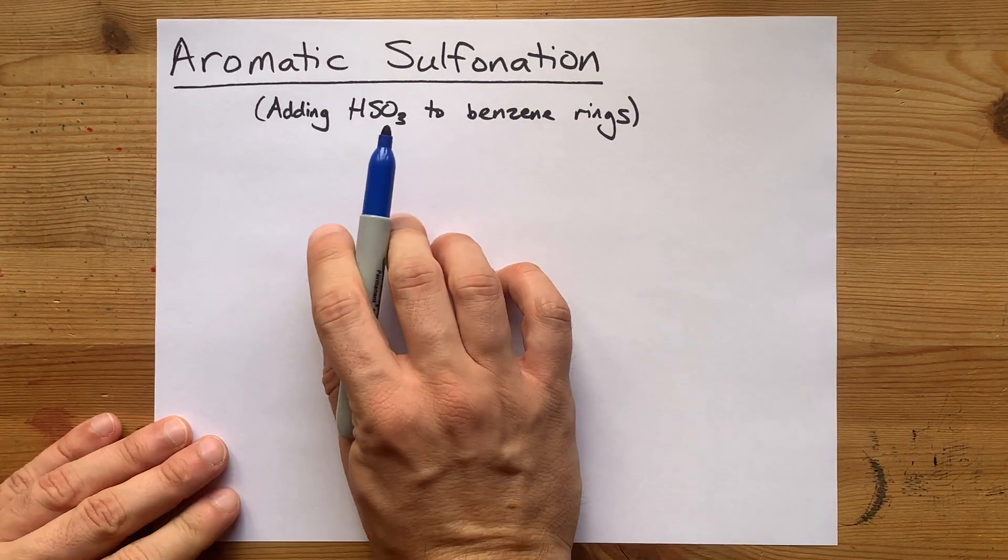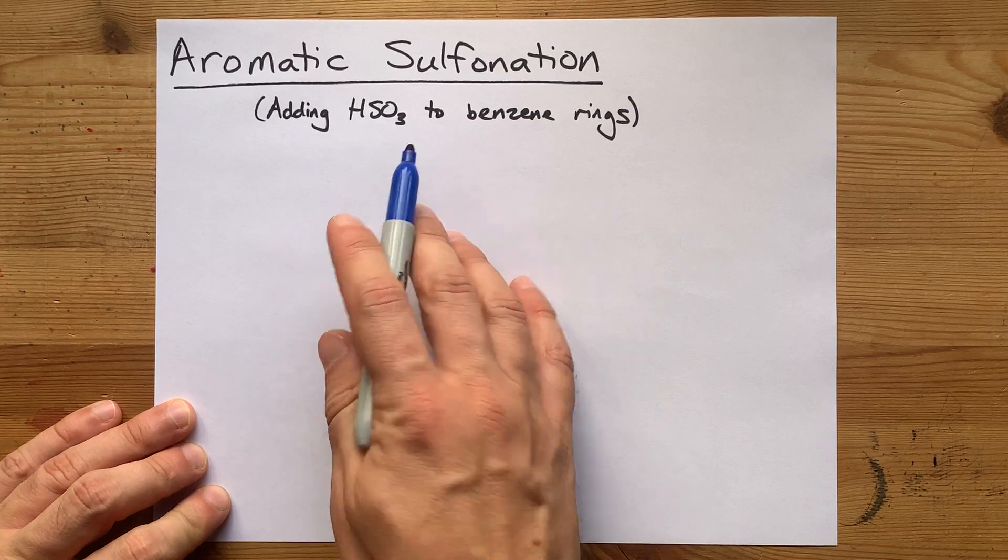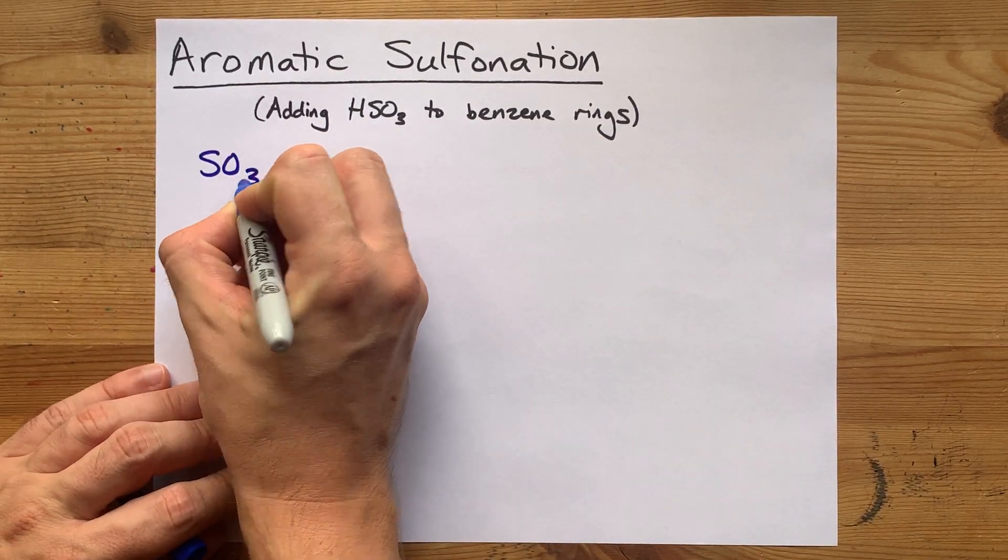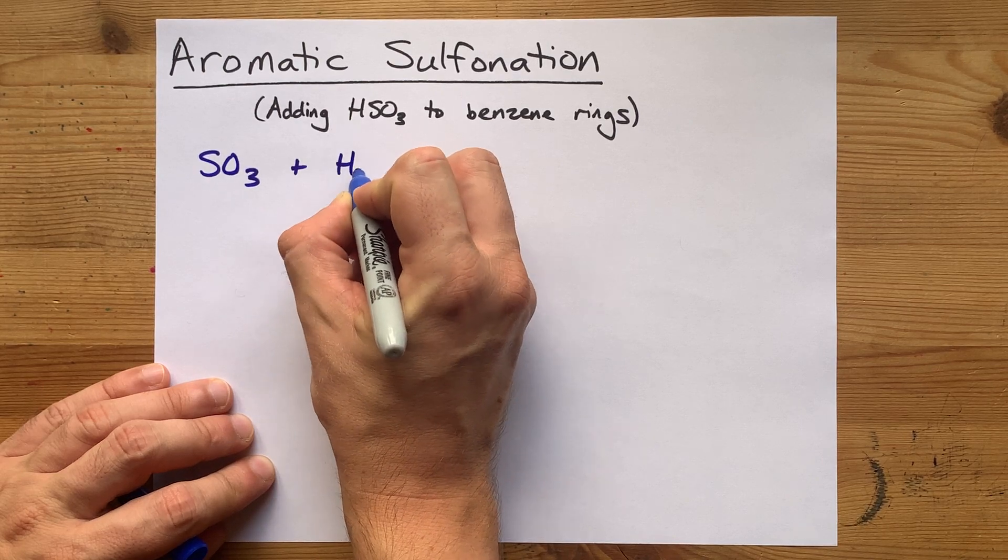Aromatic sulfonation is how you add an HSO3 group to a benzene ring. What's interesting is that most of the work gets done before you even add the benzene.